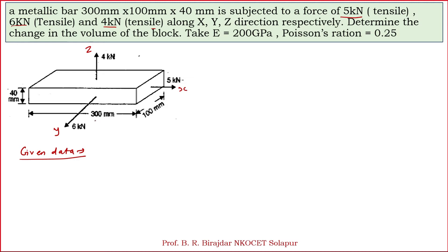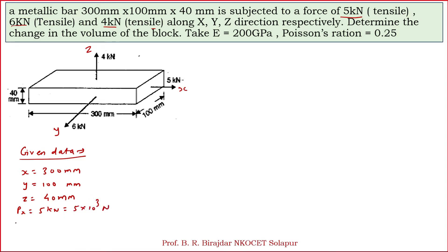The dimensions: x is 300 mm, y is 100 mm, and z is 40 mm. The load in x direction is 5 kilonewton, that is 5×10³ newton. Load in y direction is 6 kilonewton, that is 6×10³ newton. And the load in z direction is 4 kilonewton, that is 4×10³ newton.